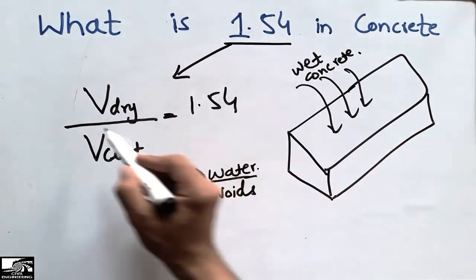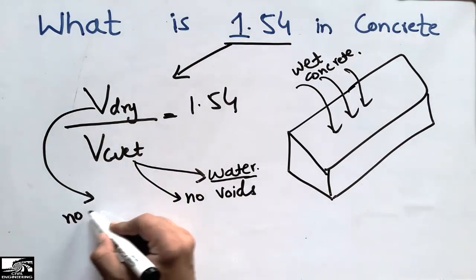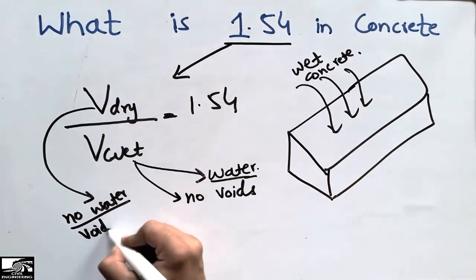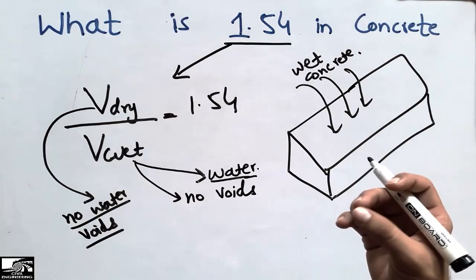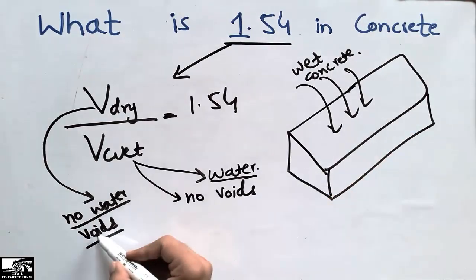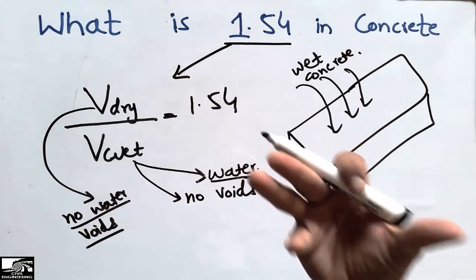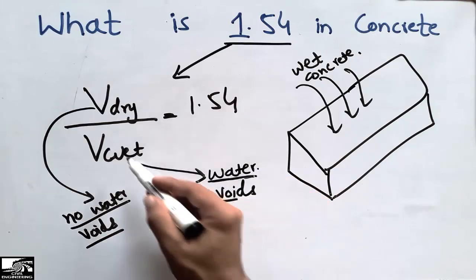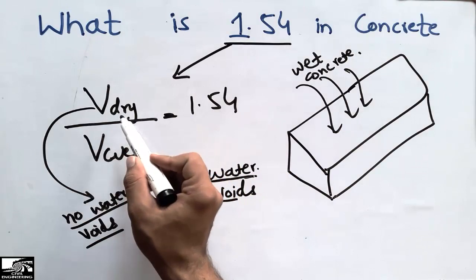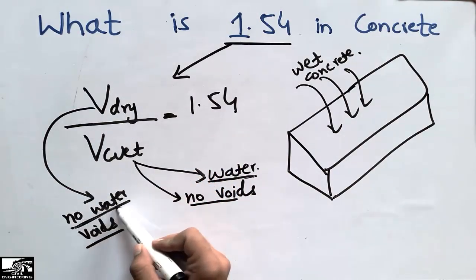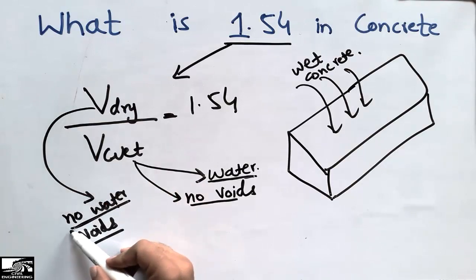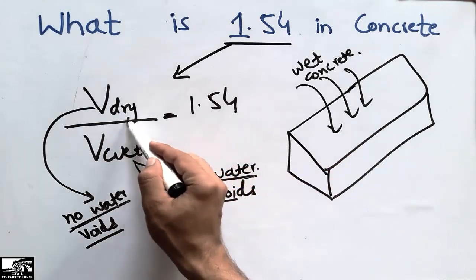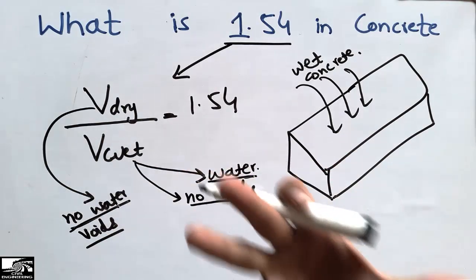But in the dry condition, there is no water present, so voids are present in the concrete. Due to these voids, the dry concrete takes more volume compared to when water is present. In the wet concrete, there are no voids, but in dry conditions, the voids are present and they make the volume more.